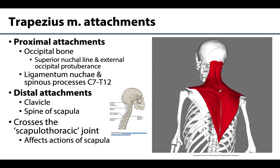In terms of proximal attachments, that's where I really think the expanse comes in. These muscles will attach all the way up on the occipital bone at the external occipital protuberance, which is kind of in the midline. If you palpate the back of your own head, you will likely feel a bump back there — that is the external occipital protuberance. There will be a line of bone extending laterally from either side, called the superior nuchal line, which is going to be the superior-most attachment.